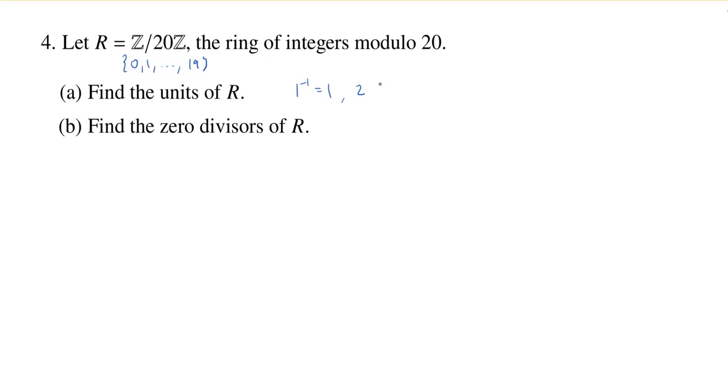But in class, we actually proved a generic result for modular integers. Namely, if we look at Z mod nZ and we just take a number a, an integer a, then a is invertible, or equivalently a is a unit, if and only if the greatest common divisor of a and n is equal to 1.